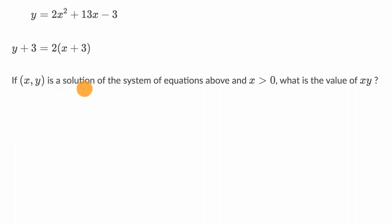We're told if x comma y is a solution of the system of equations above and x is greater than zero, what is the value of xy? Pause this video and see if you can figure this out.